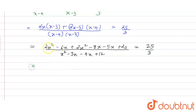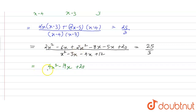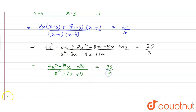Simplifying the numerator: 2x squared plus 2x squared equals 4x squared; minus 6x minus 8x is minus 14x, and minus 5x gives minus 19x; plus 20. In the denominator, we have x squared minus 7x plus 12, equal to 25 divided by 3.